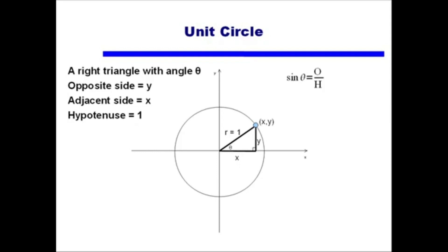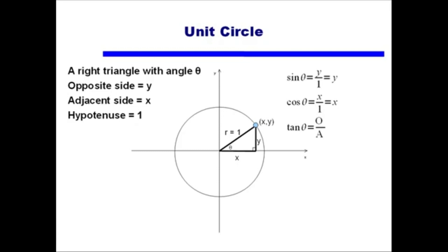Let's start with sine of theta. Sine of theta is opposite over hypotenuse. With this particular example, if the opposite side is y and the hypotenuse is 1, then sine of theta equals y over 1, or simply y. Cosine is adjacent over hypotenuse — the adjacent side is length x and the hypotenuse is 1, so cosine of theta equals x. Lastly, tangent of theta is the opposite side over the adjacent side, or y over x.